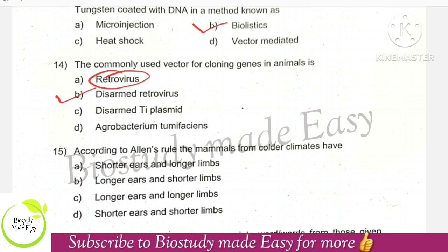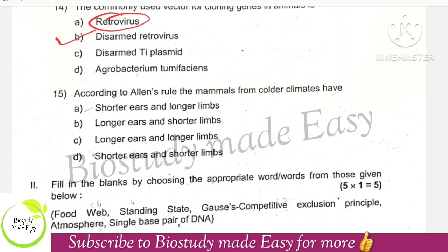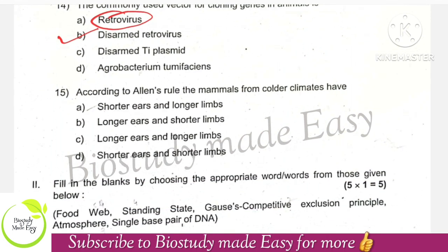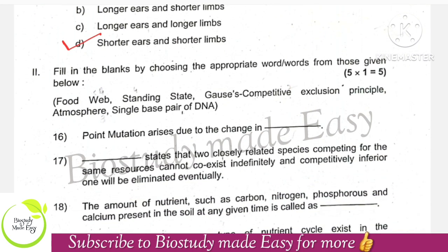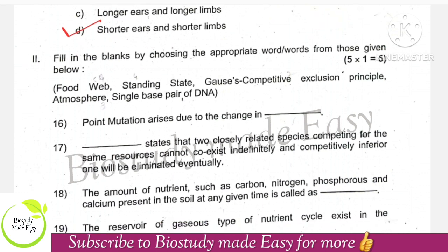According to Allen's rule, organisms from colder climates — the right option is option D: they have shorter ears and shorter limbs.